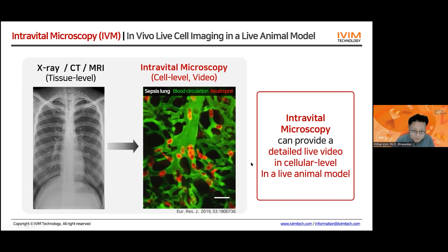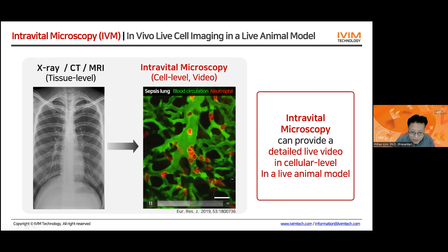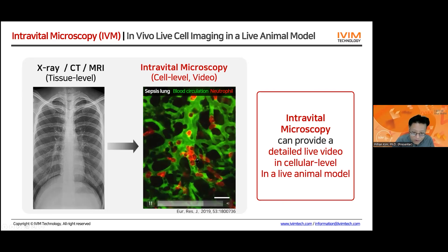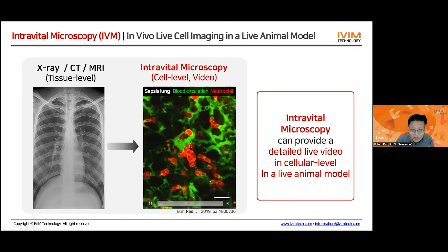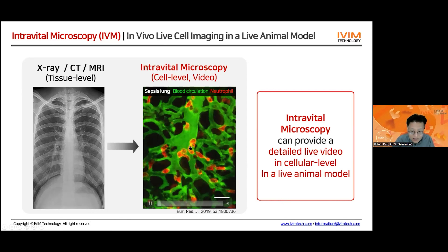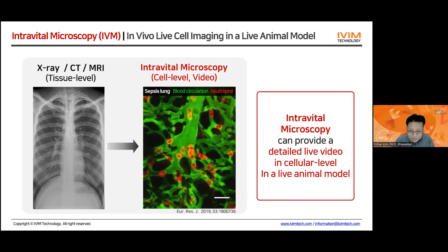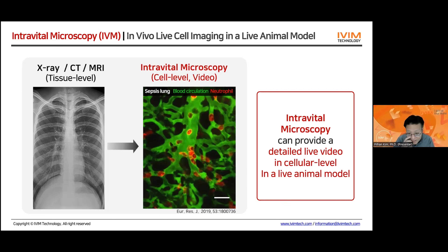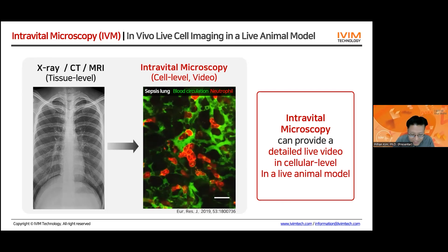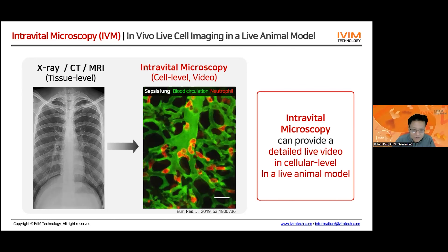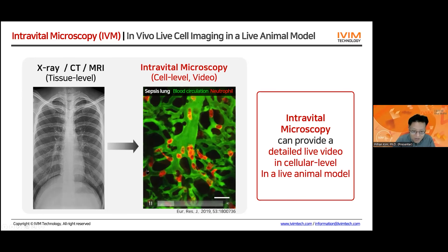In this video, you can see the neutrophil is very active — they move very actively. Then suddenly it makes a small cluster in the middle and blocks the arteriole. The neutrophil cluster fully disturbs and stops the blood flow. This is one of the key cellular-level dynamic events happening in the sepsis mouse model.